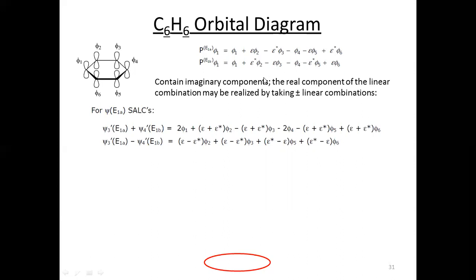For φ3, the negative sign is common in both cases, so I factor it out: −(epsilon + epsilon*)φ3. Next, both φ4 terms have negative signs, giving −2φ4. Similarly, factoring gives −(epsilon + epsilon*)φ5, and then (epsilon + epsilon*)φ6 as well.